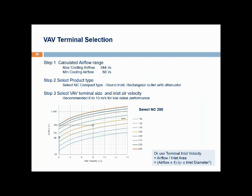Continuing the earlier example to complete the unit selection: Step one — the calculated airflow range is maximum cooling airflow of 244 L/s and minimum of 60 L/s. Step two — select the product type: a compact type, round inlet and rectangular outlet, with internal insulation for thermal insulation and acoustic attenuation. Step three — select the VAV terminal size. Based on the recommended 8 to 10 m/s and the chart shown, we select model NC200 with a maximum airflow of 244 L/s at an air velocity of 8 m/s. Alternatively, the unit size can be found by calculation using the relationship between airflow, air velocity, and area.